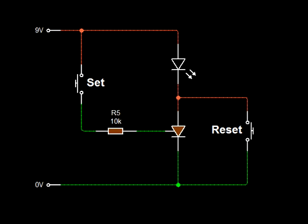That's because when the current is diverted away, the thyristor unlatches internally. So we can press set to light the LED and reset to turn it off again.